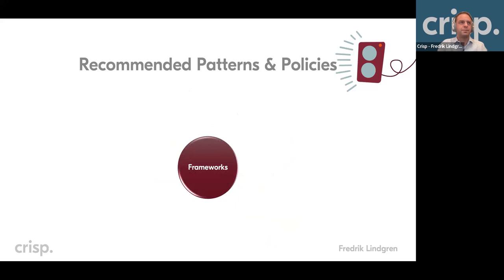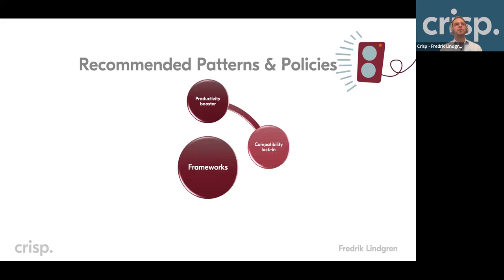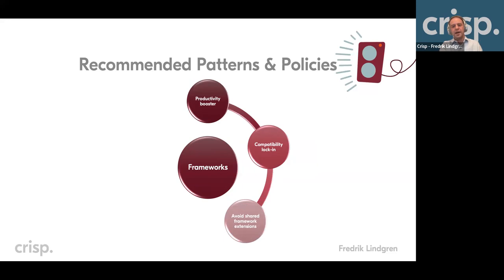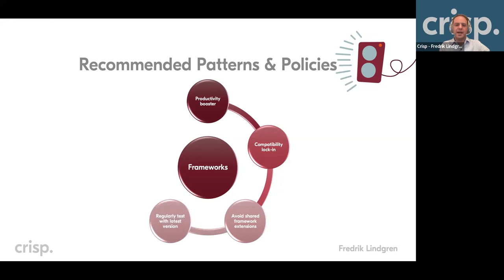Next is frameworks. Frameworks are a little bit special as dependencies — they can be a real productivity booster with really high value, but there can also be big compatibility lock-in. The reason is that a framework typically makes you adapt your code to it, so it touches much more of your code than other dependencies. One thing to really stay away from is building local organization framework extensions, because then you're really tying into a particular version and it makes it really hard to upgrade when a new generation of the framework comes. As with platforms, regularly test with the latest version but depend on a stable one in production.